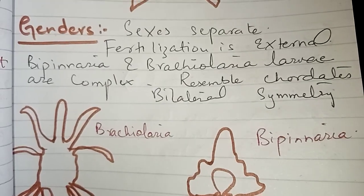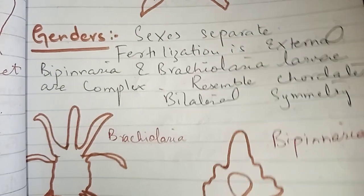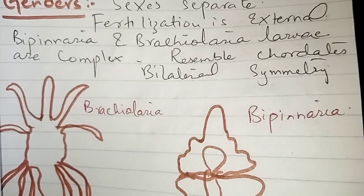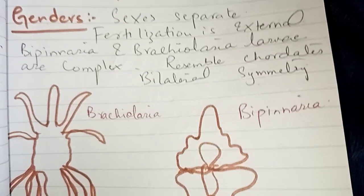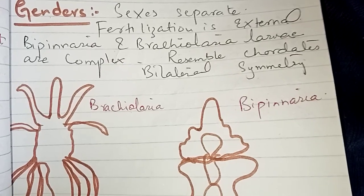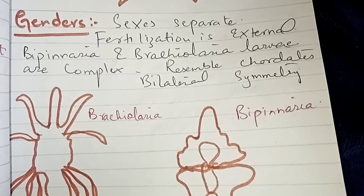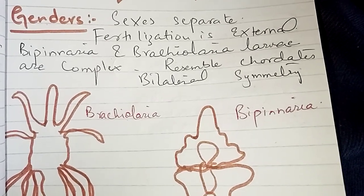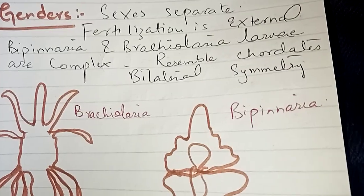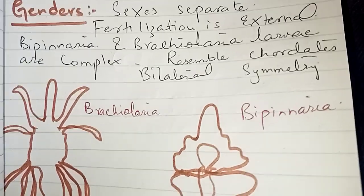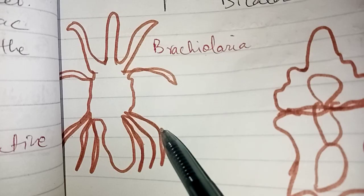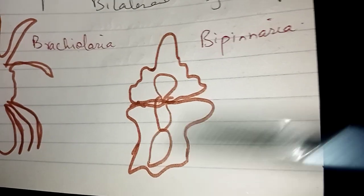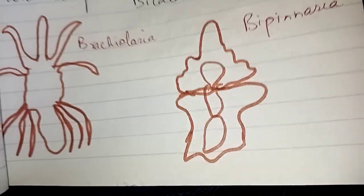Regarding reproduction, the sexes are separate — there is a male partner and a female partner. Fertilization is external and occurs in water. An important feature is that two types of larvae are formed, and they are very complex. Their names should be remembered: one larva is the bipinnaria and the other is the brachiolaria larva. Both of these larval stages are bilateral in symmetry.